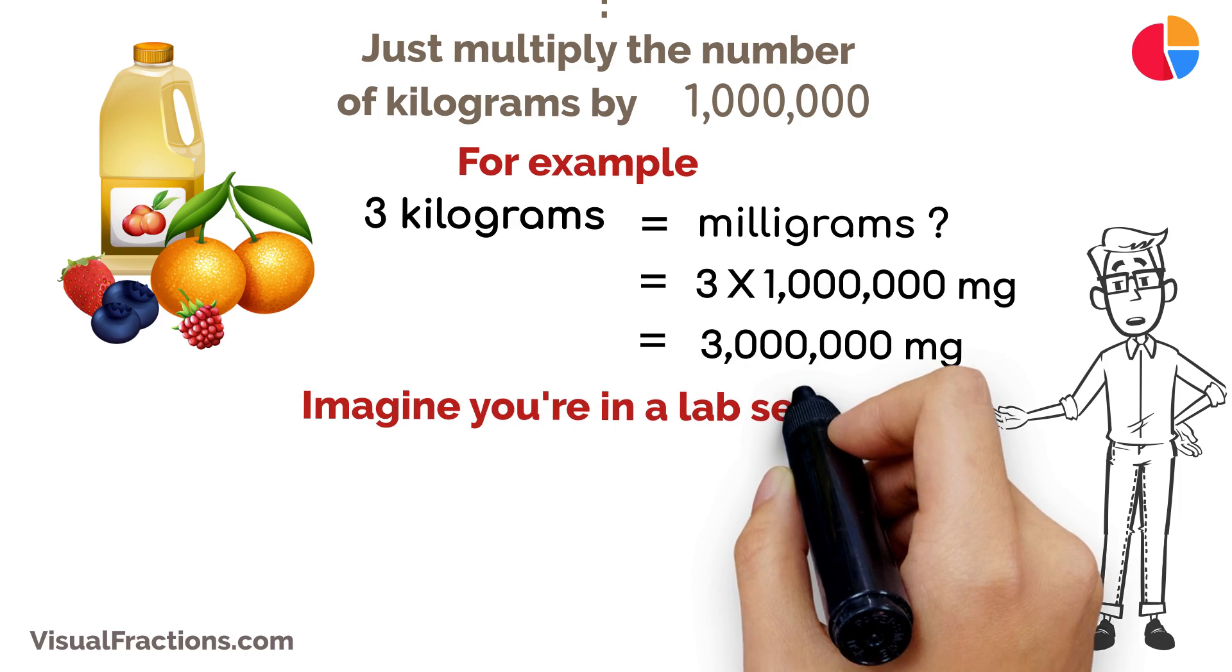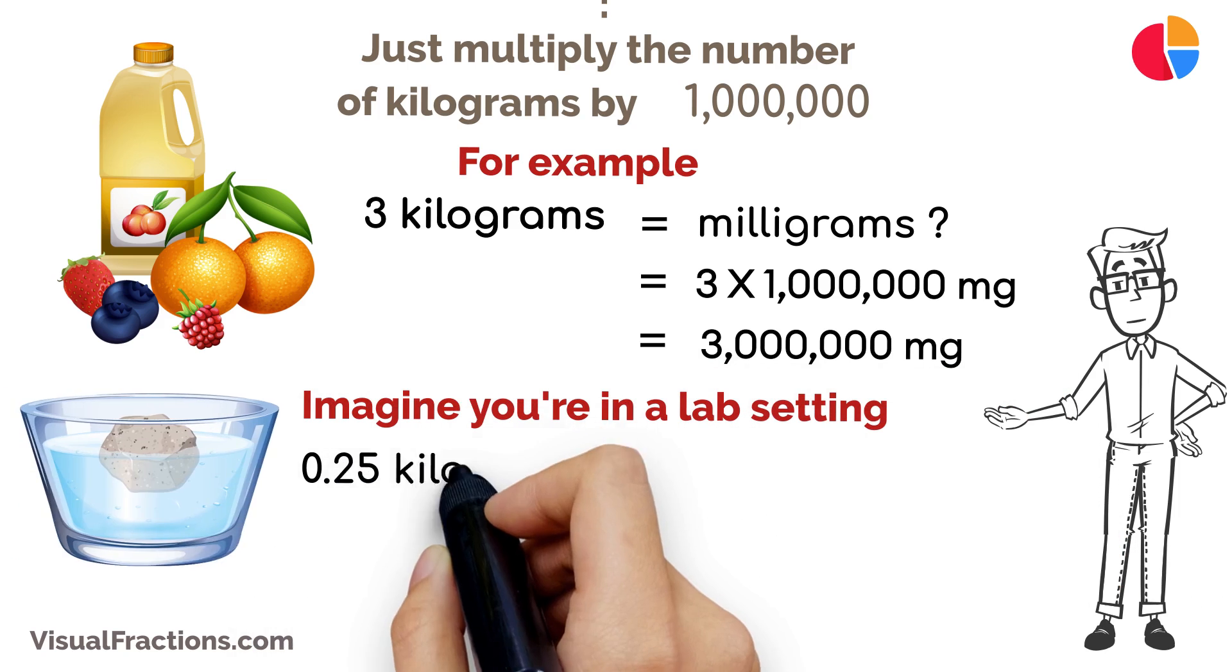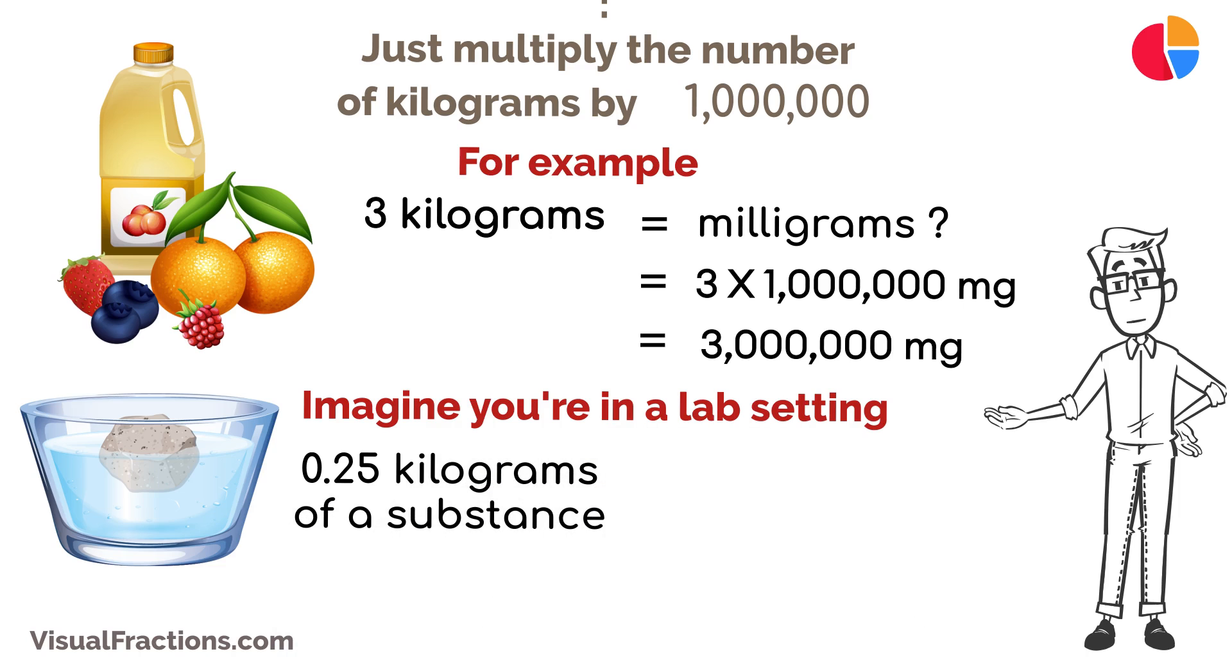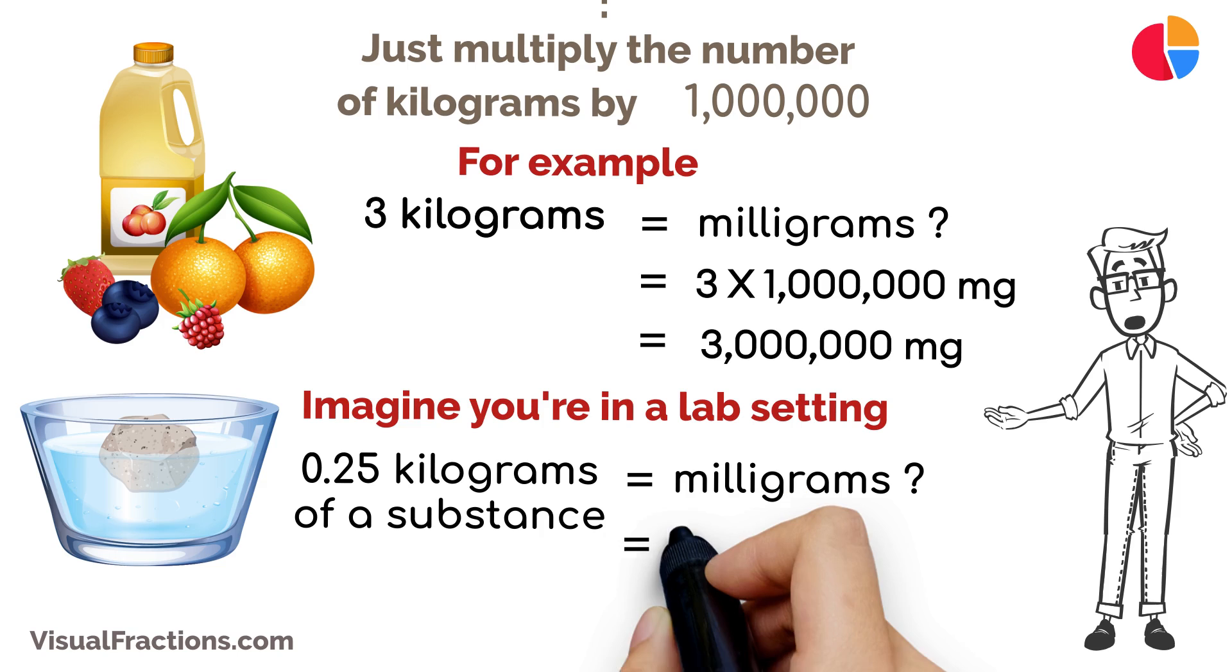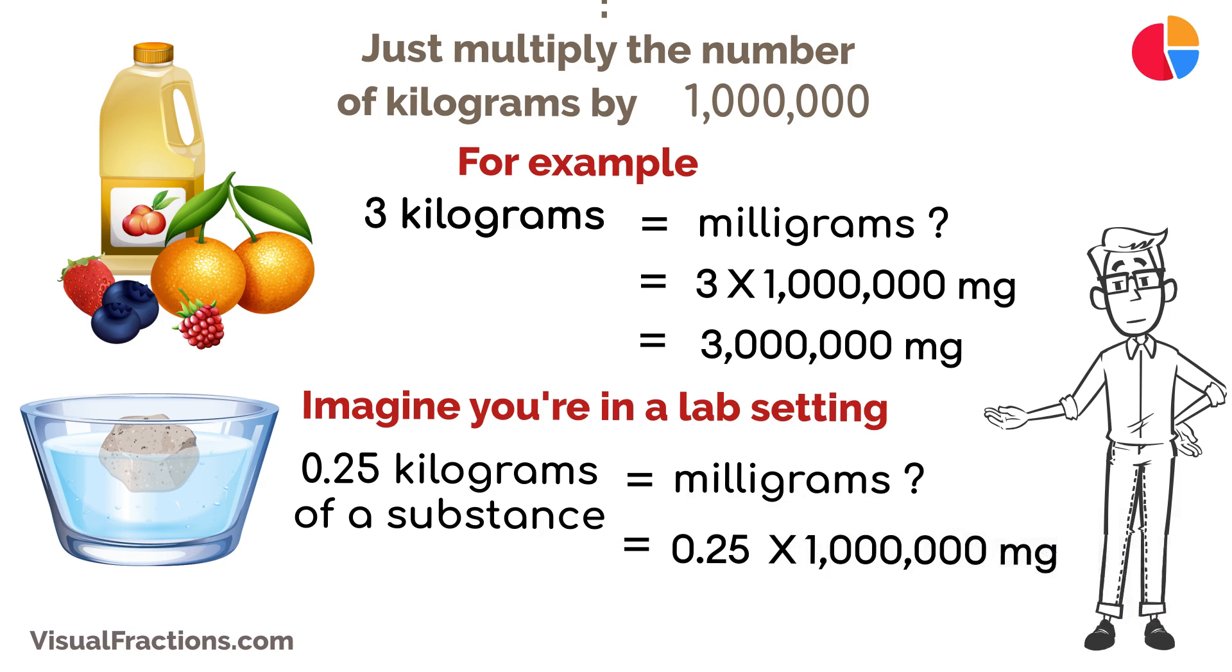Imagine you're in a lab setting, and you need to convert 0.25 kilograms of a substance into milligrams for a precise experiment. By multiplying 0.25 kilograms by one million, you find out that you need 250,000 milligrams of that substance.